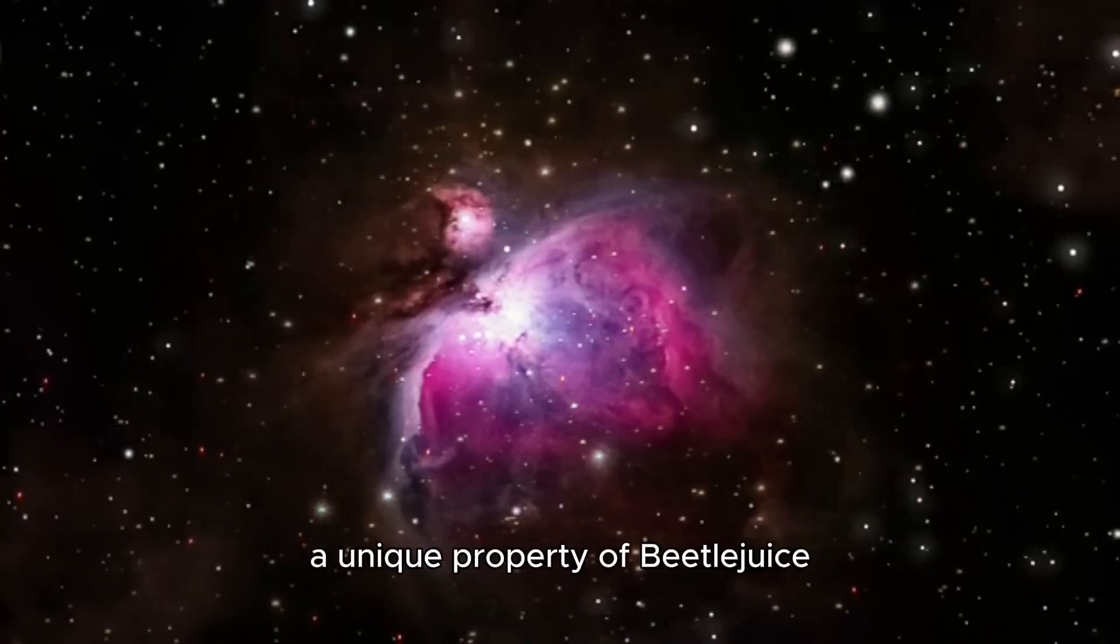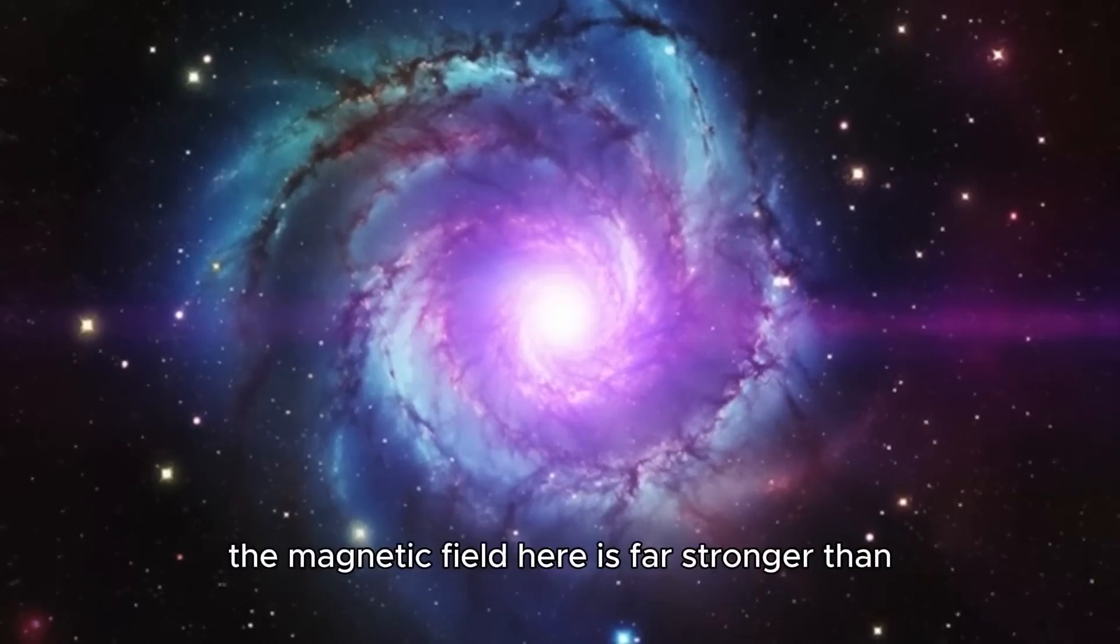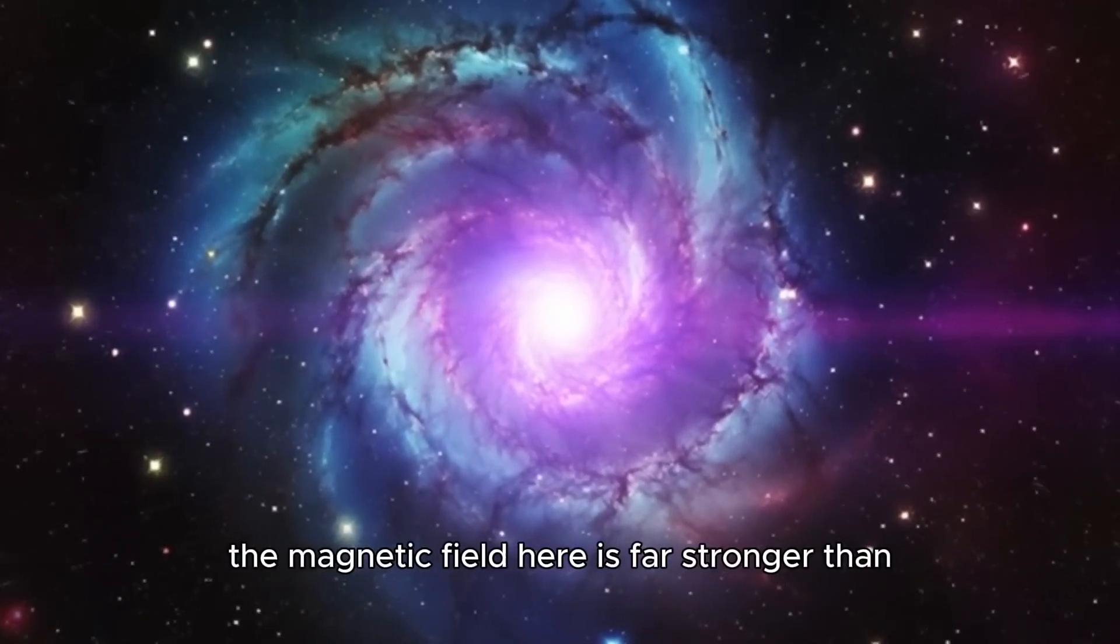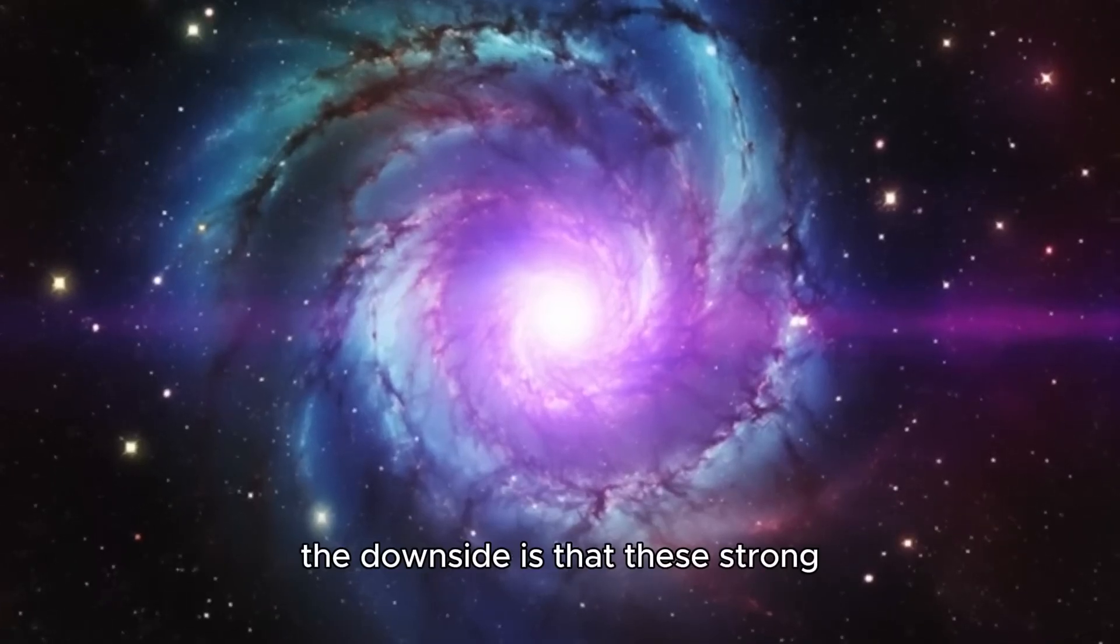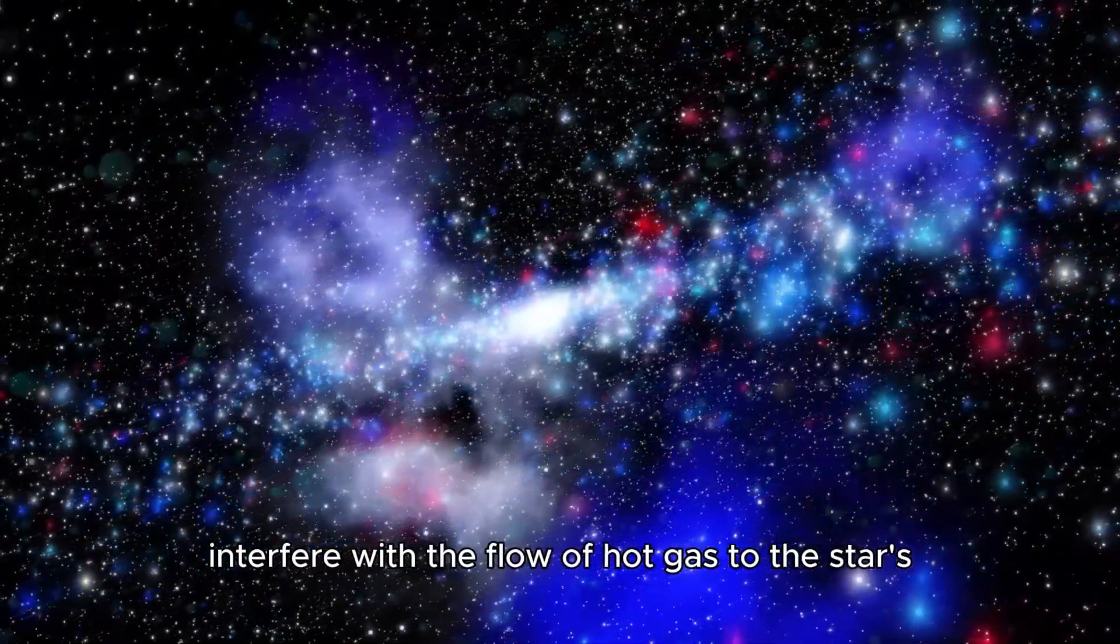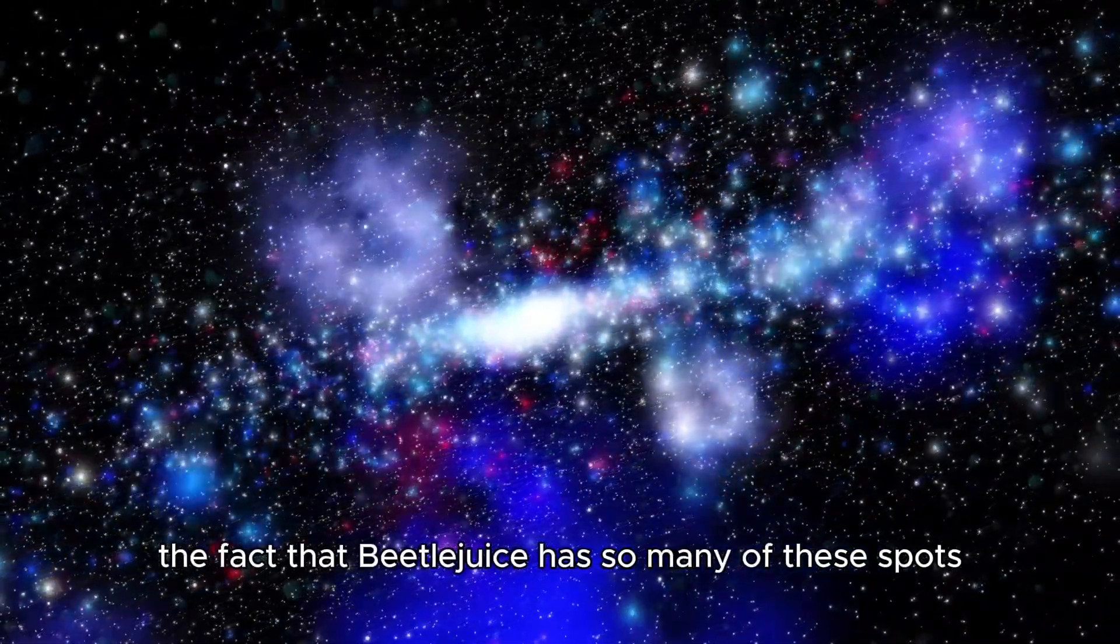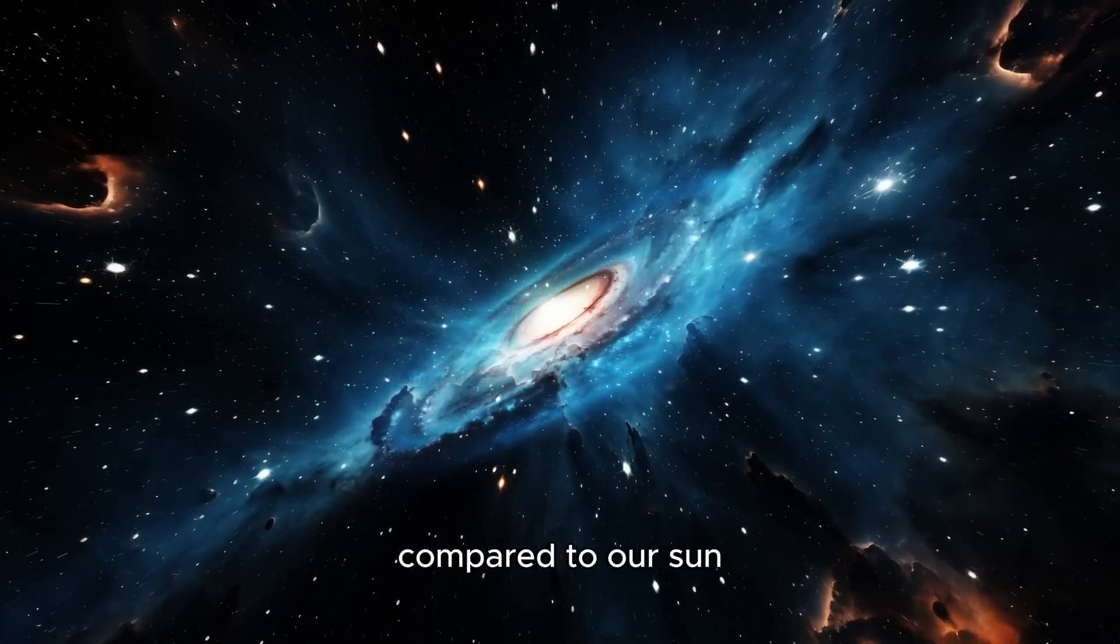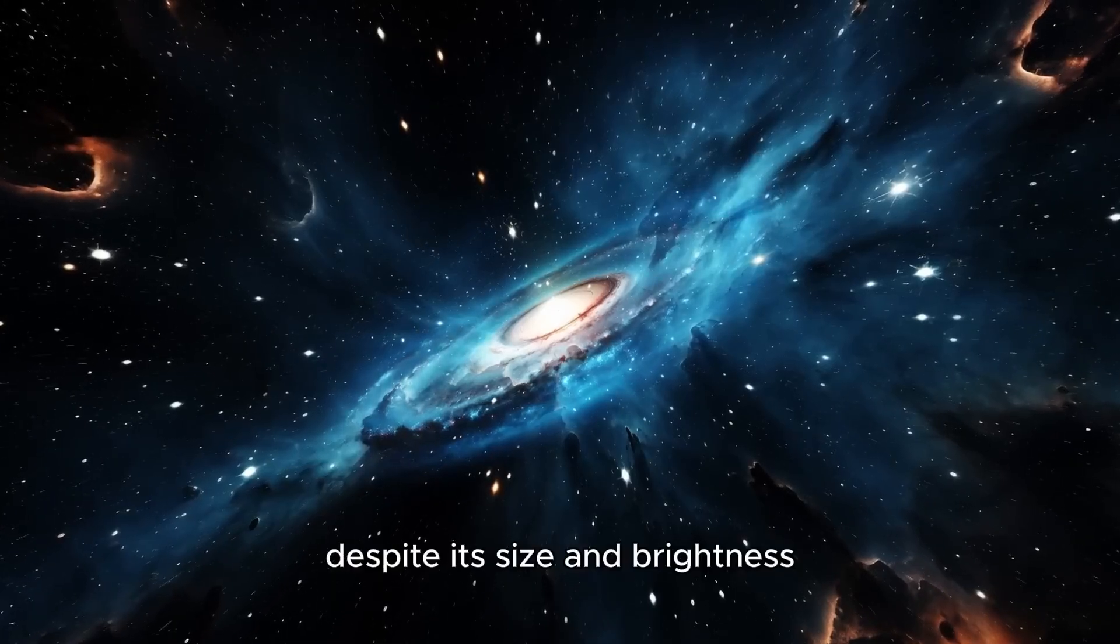A unique property of Betelgeuse is that its surface is covered in dark magnetic spots. The magnetic field here is far stronger than at the typical surface. However, the downside is that these strong magnetic spots interfere with the flow of hot gas to the star's outer surface, making the star cooler in these regions. The fact that Betelgeuse has so many of these spots compared to our sun helps explain why it is cooler than our sun, despite its size and brightness.